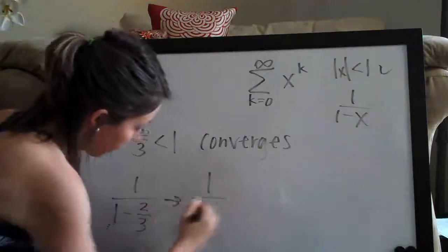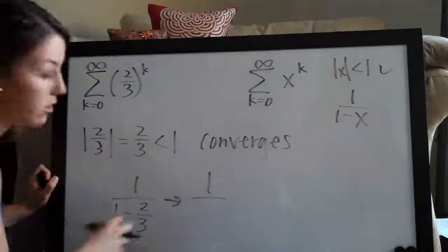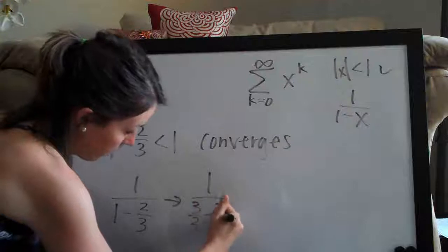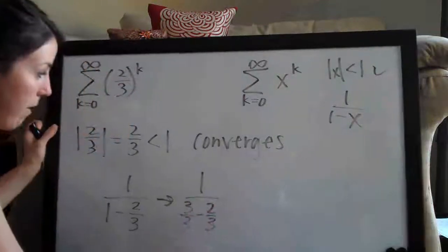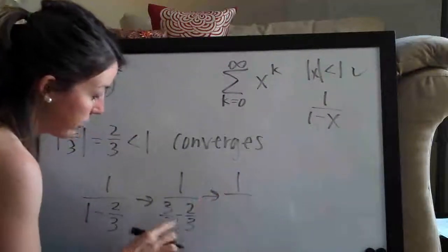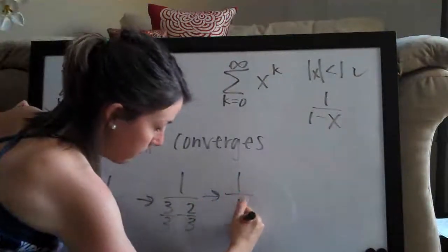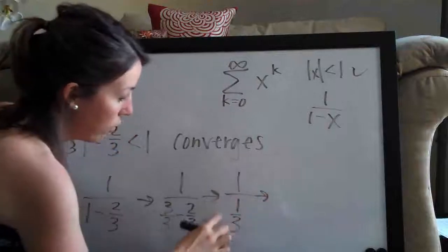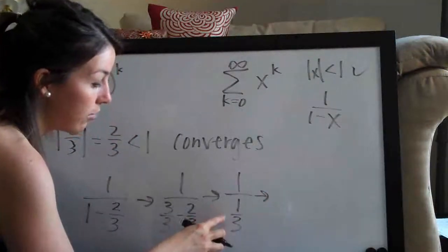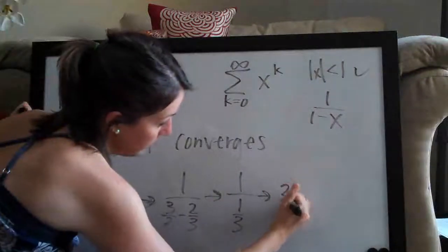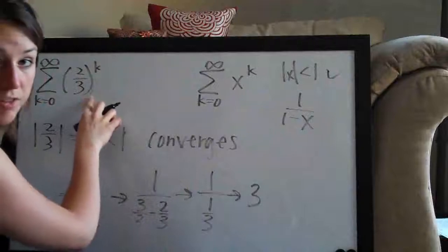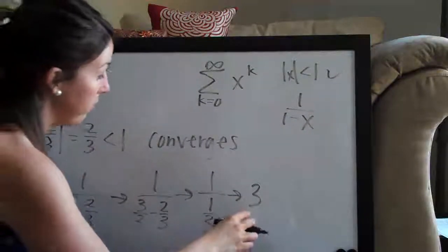I'll go ahead and make this one here three-thirds so that we can easily subtract here on the bottom. So we get one over three-thirds minus two-thirds is one-third. And then one over one-third is the same as one times three over one or just three. So we know that the value of this entire series or the sum of the whole series is three.